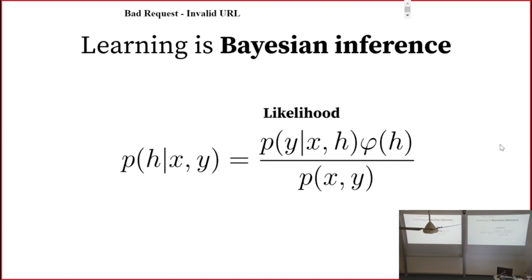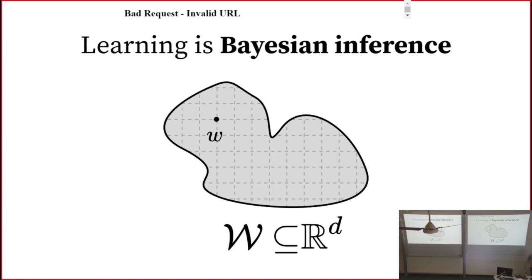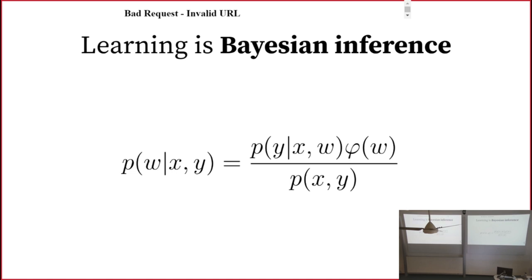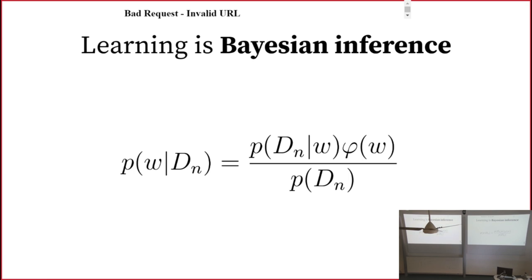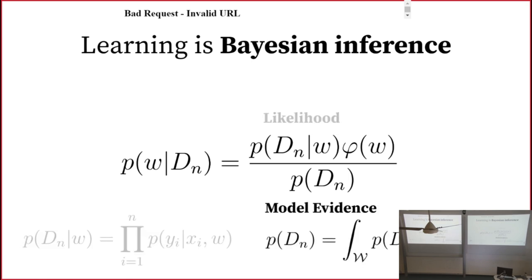All these quantities have names: likelihood, prior, model evidence, posterior. In practice, to make this implementable, instead of abstract hypotheses we think about parameterized models — something you can differentiate. You can move through the space and change the weights. The learning is updating your belief in weights of some parameterized model class in response to data. In general, we do this with more than one sample — a full dataset. The likelihood becomes a product over individual samples' likelihoods, assuming they're independent and identically sampled. The model evidence is just an integral over the top, a normalizing factor.